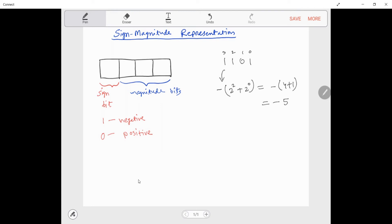Let's see how you would do it for positive five. You would have zero, one, zero, one. So zero means positive. And these are the positions of each bit. Then you would have two squared plus two to the power of zero. This gives you four plus one equals five.